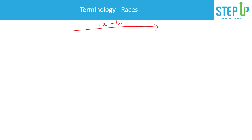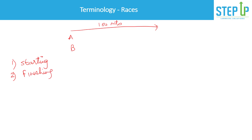Let's imagine there is a 100-meter race and A and B are participating. Before you attempt these questions, you need to understand some basic terminology. First is the starting point — where the race starts from. Second is the finishing point — where the race finishes. Both are common sense and very straightforward.